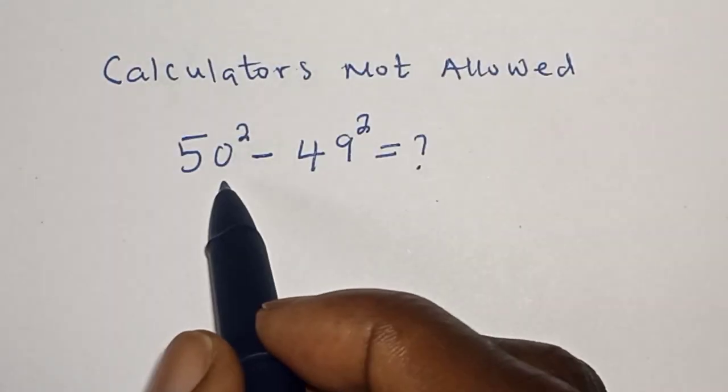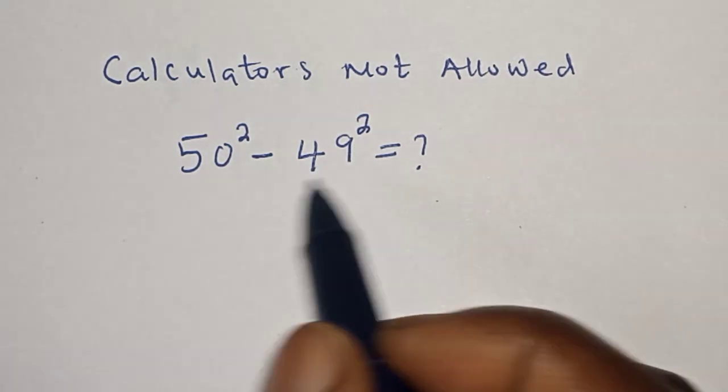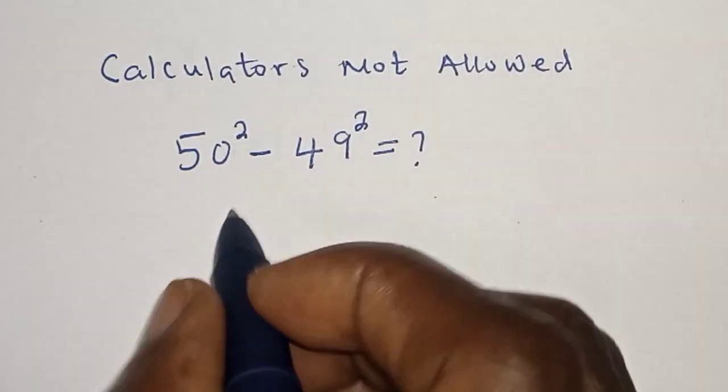Hello, welcome to Magist. In this class, we want to simplify this nice question: 50 squared minus 49 squared equals what? Remember, calculators not allowed.